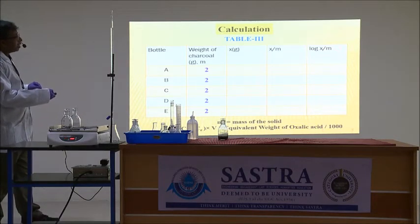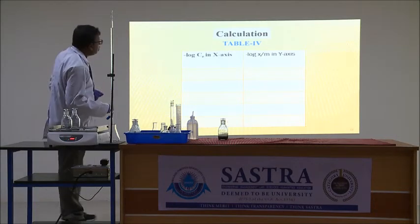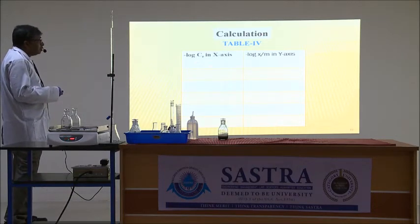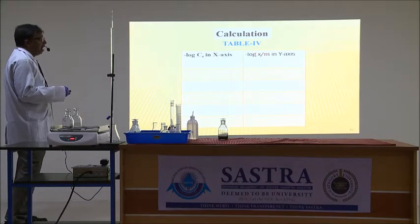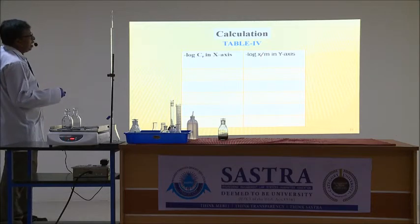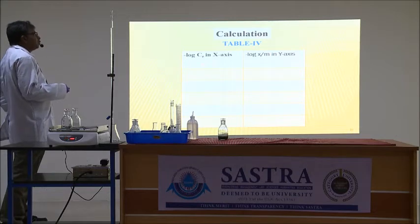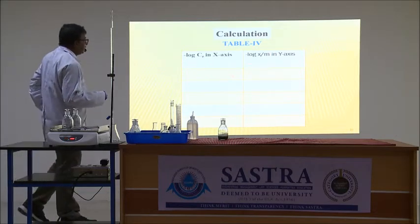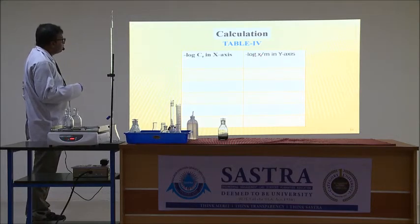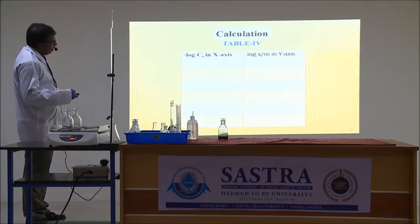Consequently, we can calculate log(X/M) and log CE. Since the equilibrium concentrations and the extent of adsorption are fractions, log CE and log(X/M) will be negative quantities. To make plotting easier, we multiply both log CE and log(X/M) by minus 1 to get positive quantities, and then plot those values.